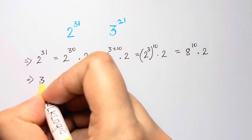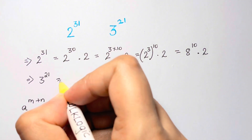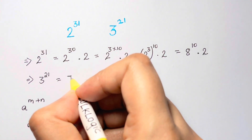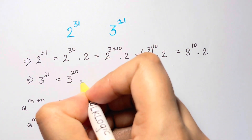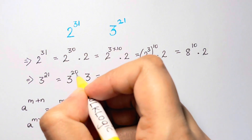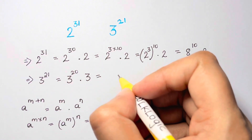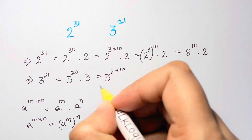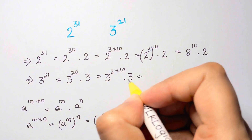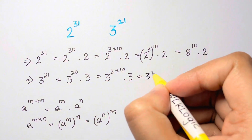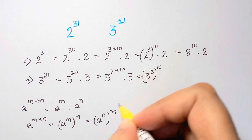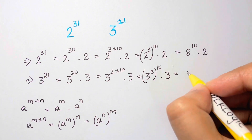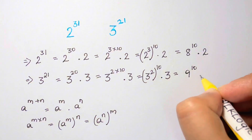We have 3 to the power of 21. Again using the same law, we can split it as 3 to the power of 20 times 3. Adding the powers: 20 plus 1 gives 21 back. Now 20 can be split as 3 to the power of 2 times 10, so we have 3 squared whole to the power of 10, times 3.